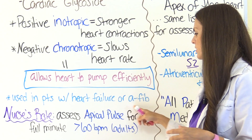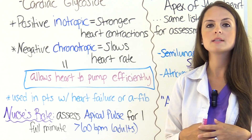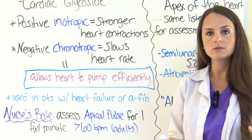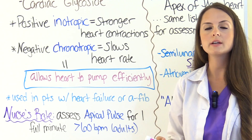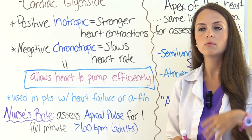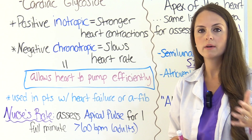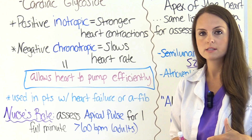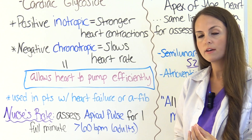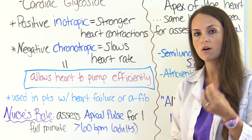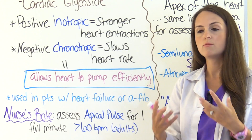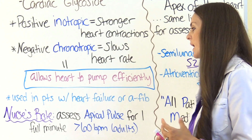Digoxin is also used in treatment of a condition called atrial fibrillation, which is one of those arrhythmias where the heart rate is beating irregularly. You have decreased blood flow, and Digoxin can slow that irregular fast heart rate down and help it beat more efficiently.